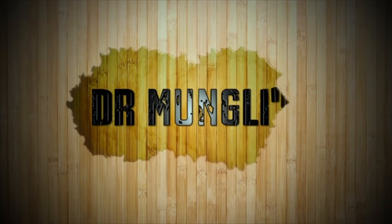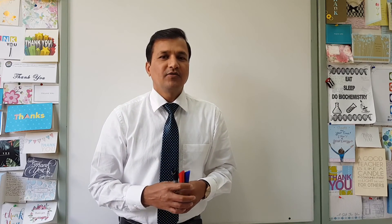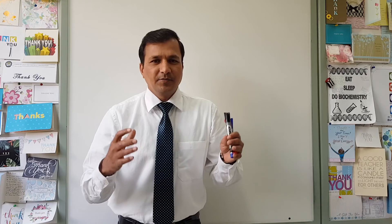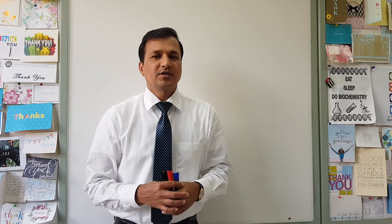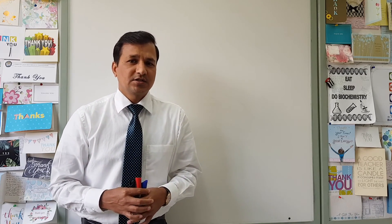Hey everyone, Dr. Mungle here. In this video, I will be explaining glycogen regulation. Glycogen regulation is explained by taking the example of liver and skeletal muscle, because glycogen is stored significantly in the liver in terms of gram-to-gram ratio, and skeletal muscle is one of the significant storage tissues for glycogen in terms of total quantity available in our body.